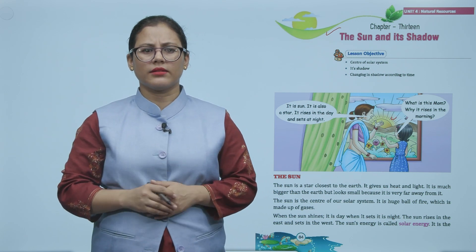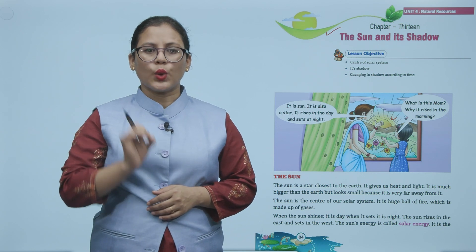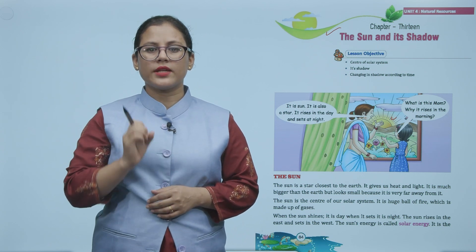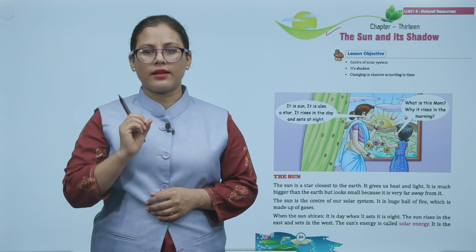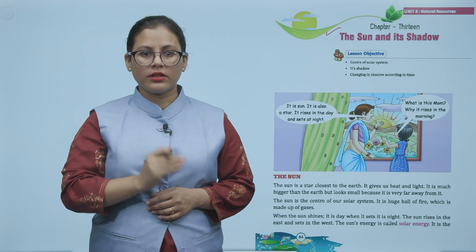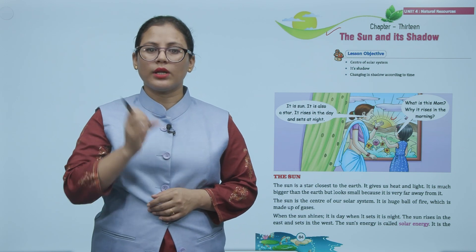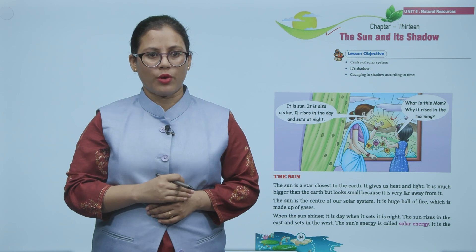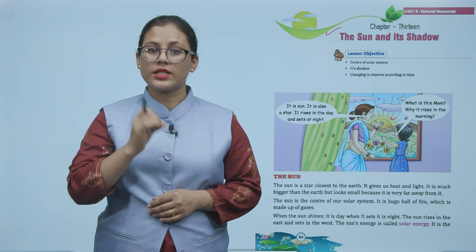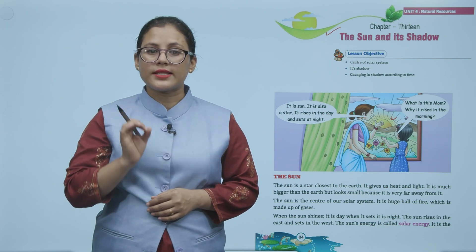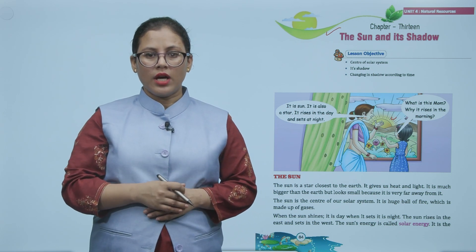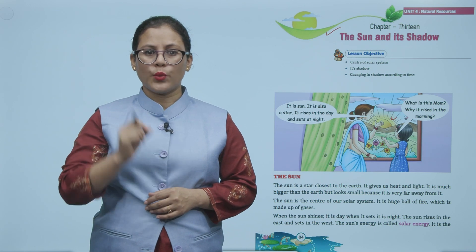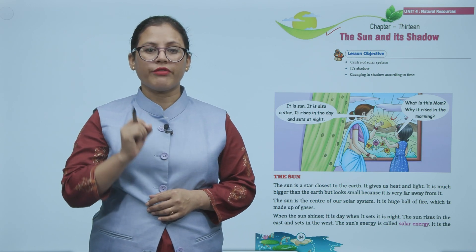The sun is a star closest to the earth. It gives us heat and light. It is much bigger than the earth but looks small because it is very far away from it. The sun is the centre of our solar system. It is a huge ball of fire which is made up of gases.